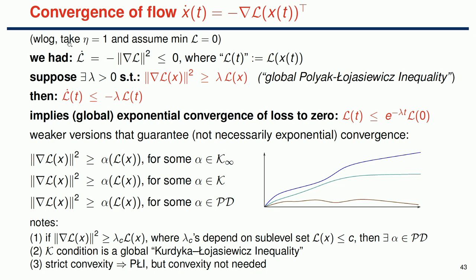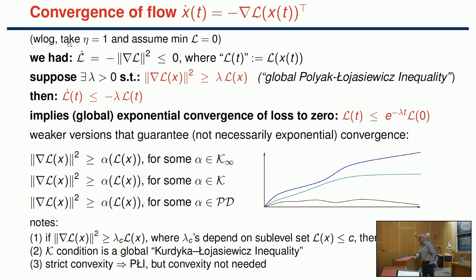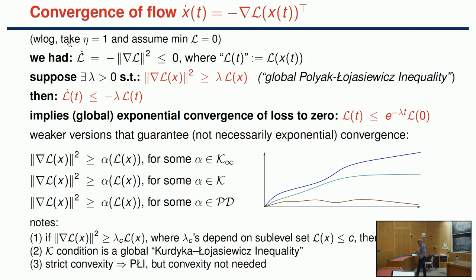If you combine L-dot ≤ -η‖∇L‖² with the global PL inequality ‖∇L‖² ≥ λL, you get L-dot ≤ -ηλL, giving exponential convergence to zero. Strict convexity implies PL, but you don't need convexity for PL. However, that is too strong a condition in many cases.